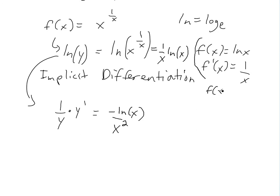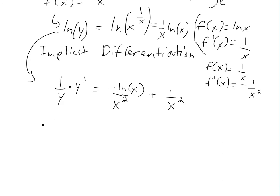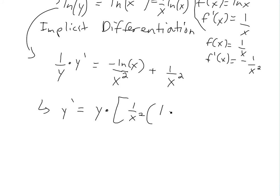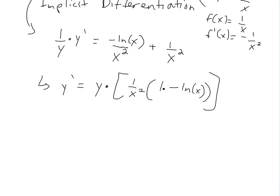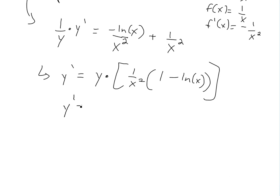...and the derivative of ln x is one over x, so by the product rule we get plus one over x times one over x, which is one over x squared. Simplifying everything, y prime equals y times one over x squared times the quantity one minus ln x. Substituting back y equals x to the one over x, we get y prime equals x to the one over x, times one over x squared, times one minus ln x.